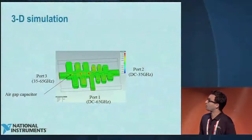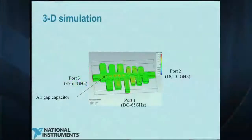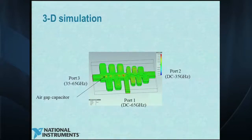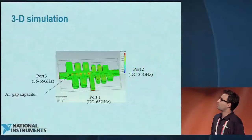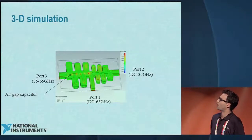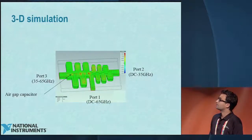Because we simulate from DC all the way to 65 gigahertz, optimization in AWR is much faster. Here are the simulation results of the diplexer: input is DC to 65 GHz, the low-pass output is DC to 35 GHz, and the high-pass output is 35 to 65 gigahertz. The structure uses lambda-over-4 stubs, open stubs, and the broadside capacitors modeled here, and the field progression from port 1 to port 2 and port 3 is shown.